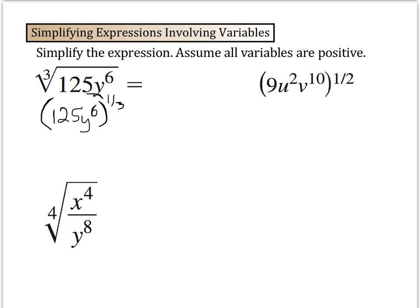Here, you get to distribute that 1 third to both of the terms that are in here. You end up with 125 to the 1 third times y to the 6th multiplied by 1 third. When you simplify that, the 125 to the 1 third is simply 5 and then times y to the 6th times 1 third will leave you y squared.